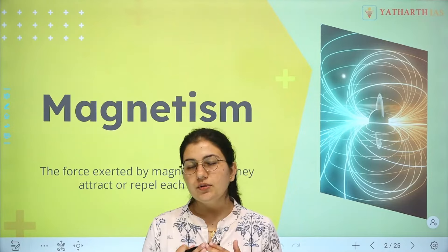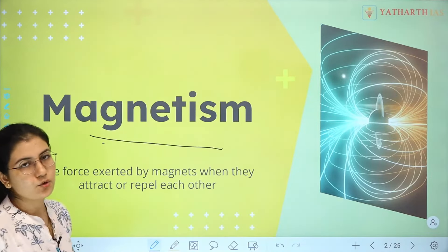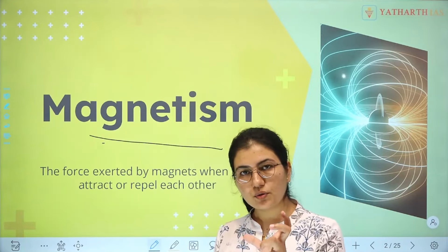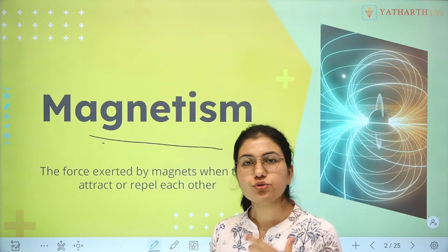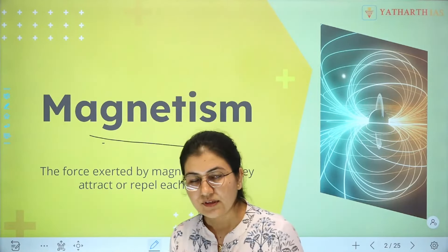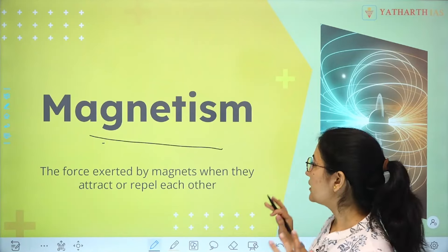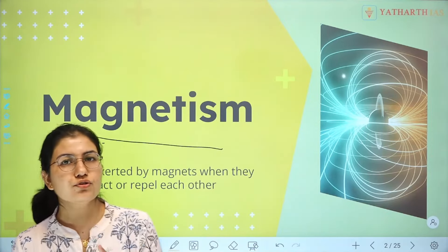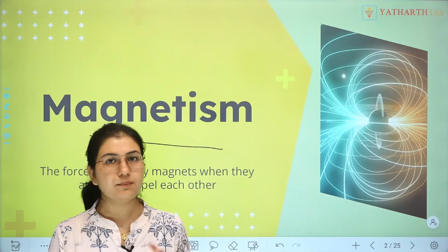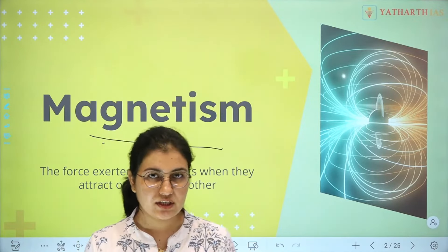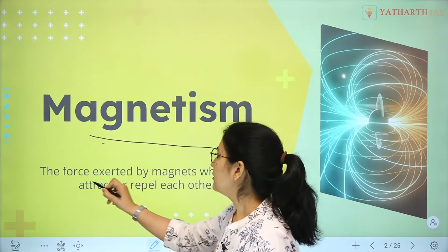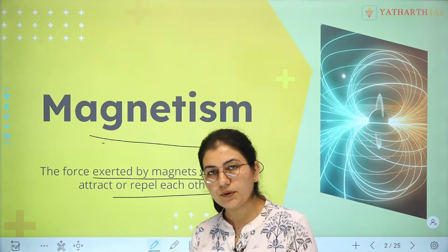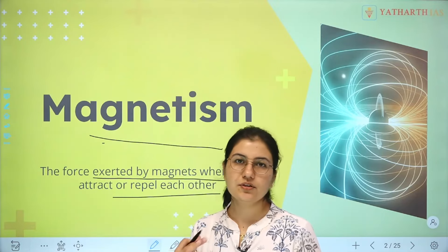Magnetism is a very important topic. Magnetism is the property of a magnet due to which it exerts force on certain things. Magnetism can be positive and negative — just as we have studied charges, where the force of attraction and repulsion depends on the nature of the charges.